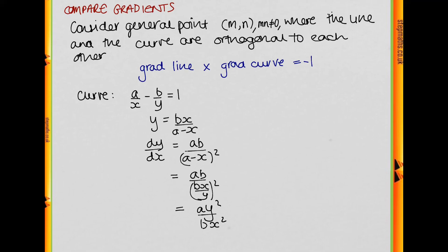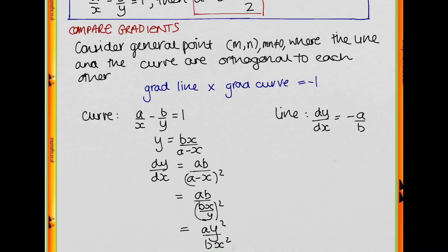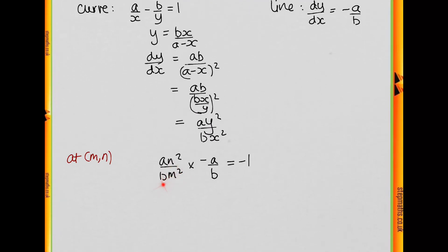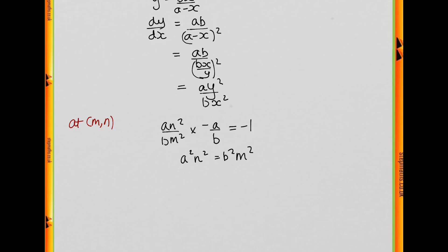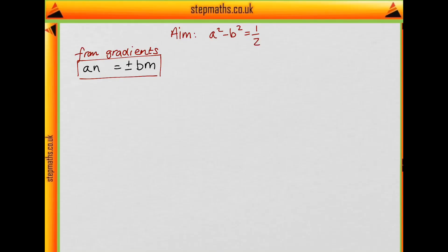The gradient of the line ax + by = 1 is the same as before, -a/b. At the point (m, n), since the line is normal to the curve, their gradients multiply to -1. So we have (an²/bm²) × (-a/b) = -1. Solving this gives a²n² = b²m², and square rooting both sides gives an = ±bm.